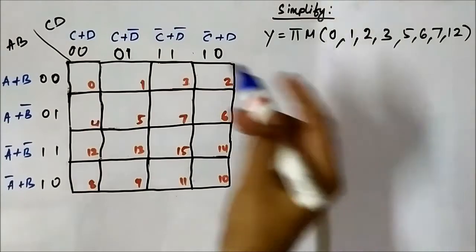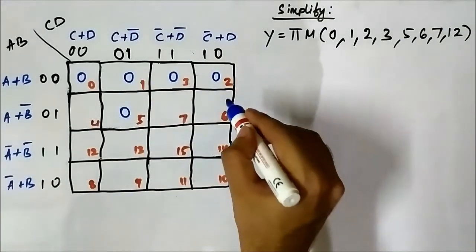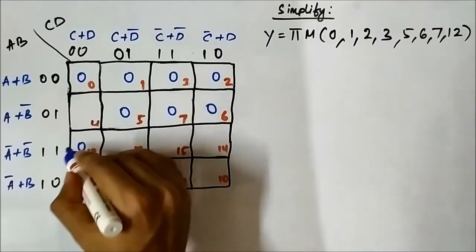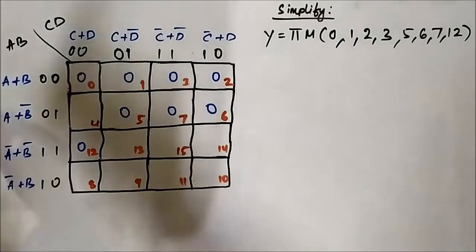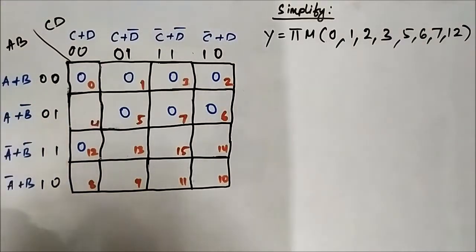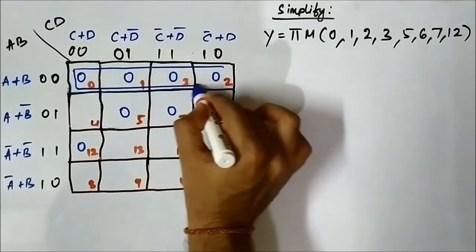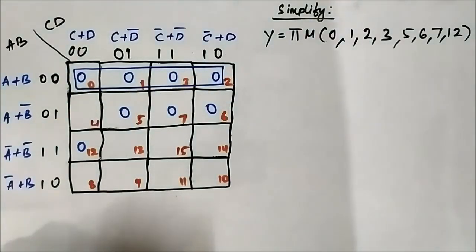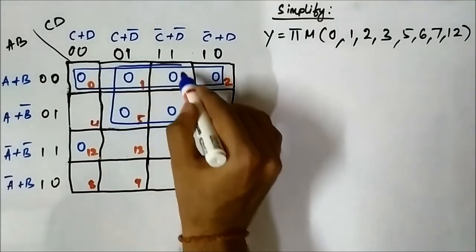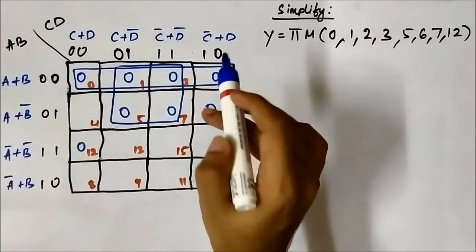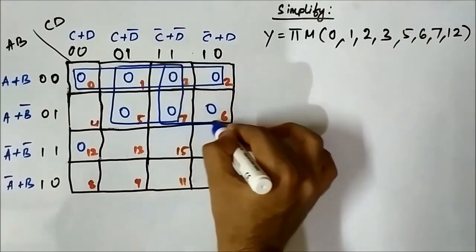We will mark the cells: 0, 1, 2, 3, 5, 6, 7, 12. Now we have to form the groups. First, cells 0, 1, 3, 2 — these 4 cells we will form a quad. Next, 1, 3, 5, 7 — we can combine to form a quad. Now pay attention to cells 3, 2, 7, 6 — we will combine them also to form a quad.